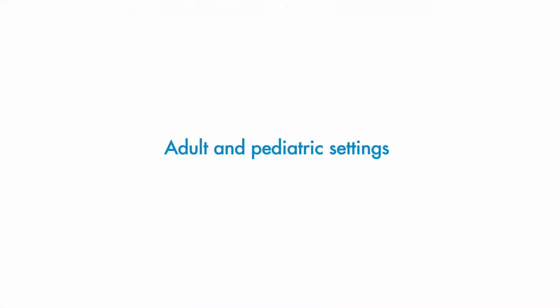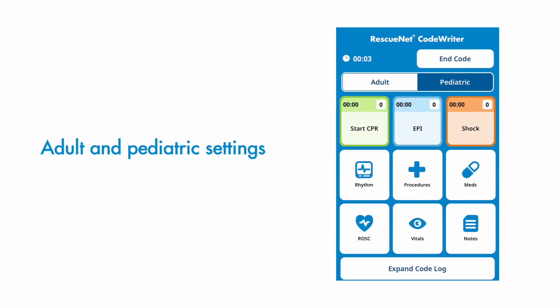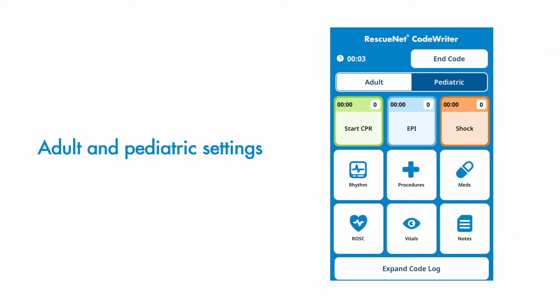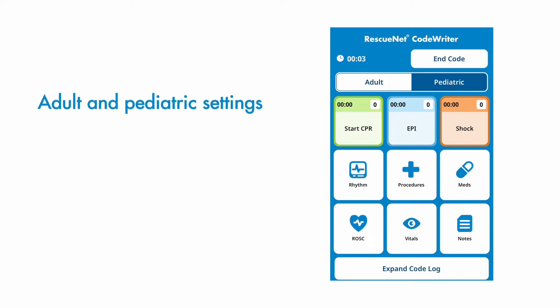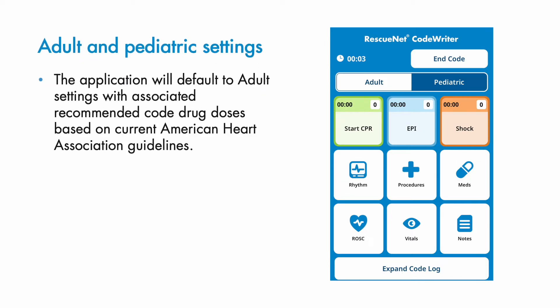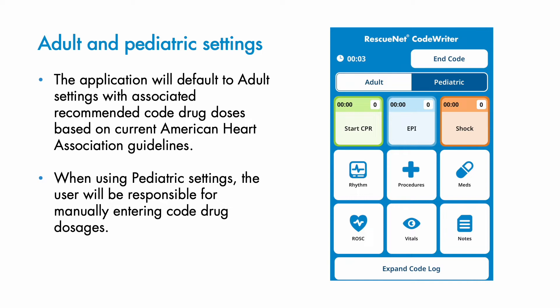Tapping Start New Code launches a documentation screen set to adult mode by default. Users can easily toggle between adult and pediatric modes using the buttons at the top of the screen. In adult mode, CodeWriter suggests common drug dosages based on current American Heart Association guidelines. In pediatric mode, the recorder must enter drug dosages manually.